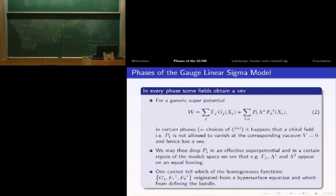There's not only the geometric phase. For a certain choice of your F_alpha parameters, it happens that one field, say P1, is not allowed to vanish at the vacuum and obtains a vacuum expectation value. You can then write down an effective superpotential in a certain region of moduli space that doesn't contain P1 anymore.